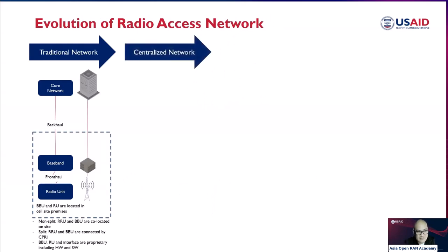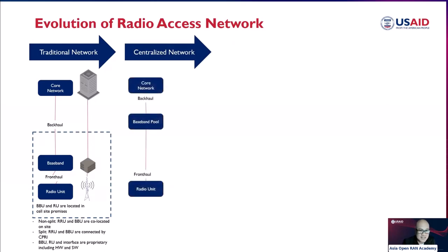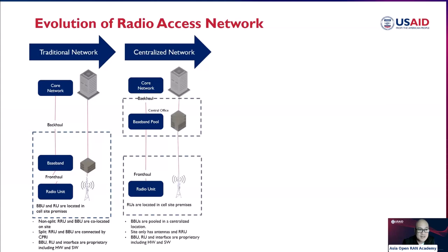The architecture then evolved into a centralized network. In this architecture, which emerged in response to the need for more flexible and cost-effective solutions, it uses a centralized processing unit to support multiple remote radio heads connected via high-speed fiber optic links. This approach helps reduce cost and improve network efficiency. What happened is that the baseband unit previously located at the premises was moved to a centralized location.